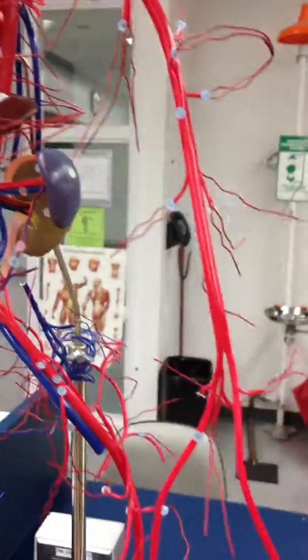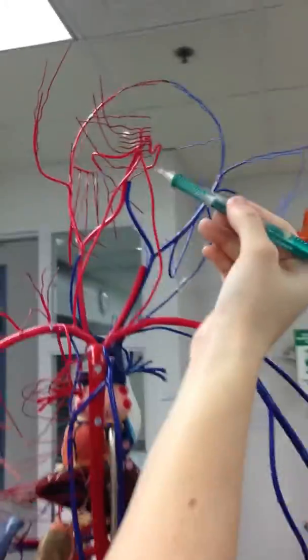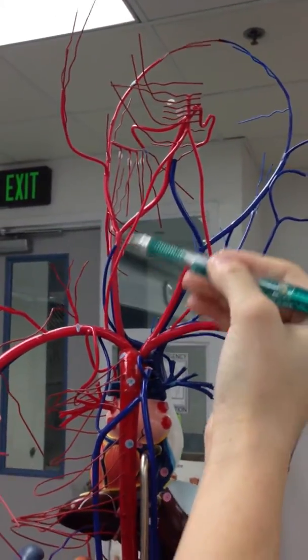The vertebral artery is in the back, which makes a V in the back of the head. My neck is right here.